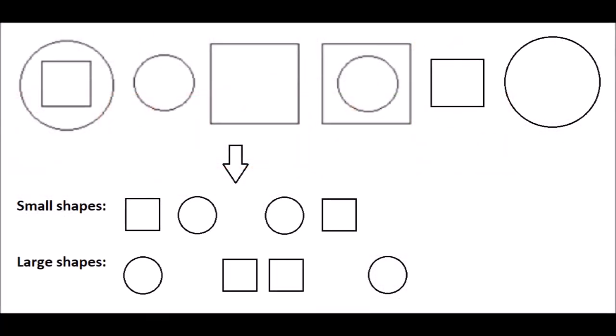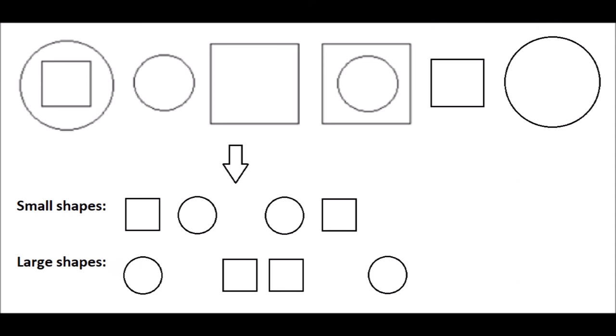The second rule that must be followed is that the sequence of small shapes and the sequence of large shapes must follow a distinct pattern. In the case of the small shapes, the pattern that must be followed is square, circle, blank, circle, square. In the case of the large shapes, the pattern that must be followed is circle, blank, square, square, blank, circle. The only option that can satisfy both of these criteria is option D.